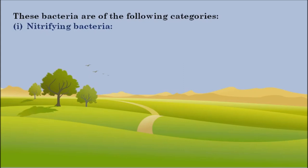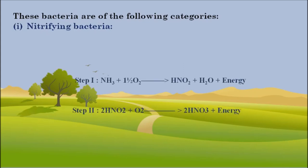The first category is nitrifying bacteria. Nitrifying bacteria oxidize ammonia to nitrate in two steps. The first step involves the oxidation of ammonia into nitrous acid by bacteria like Nitrosomonas. The second step involves the oxidation of nitrous acid into nitric acid by Nitrobacter.